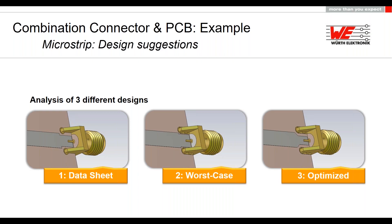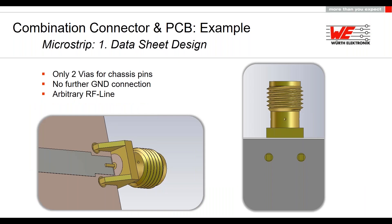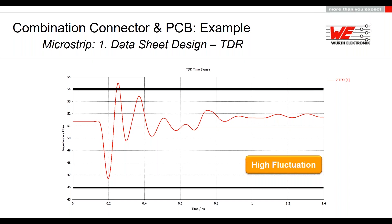Three different designs are analyzed to find the most stable impedance response. Case 1 follows the initial datasheet layout: only two vias for the chassis pins, no further ground connection, and a normal RF line calculated from formulas — nothing special for the connector. Looking at the TDR analysis, we can see too much impedance mismatch in the transition area, though the system stabilizes on the transmission line afterwards. The goal is to keep impedance at 50 ohms.